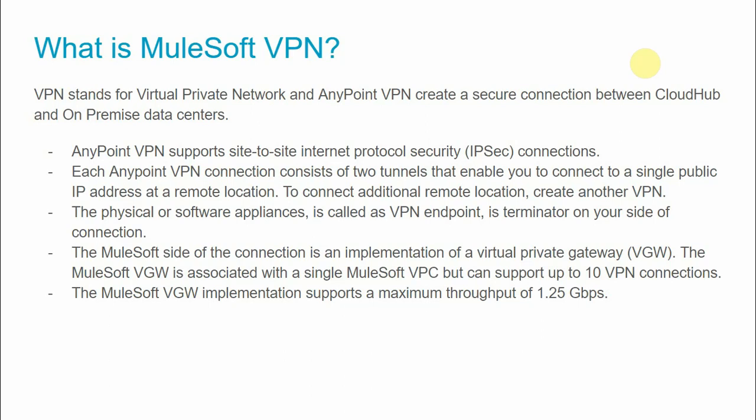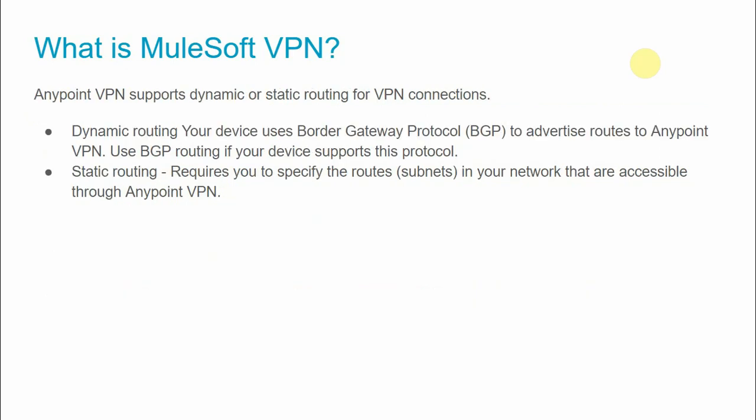One VPN is associated with a single VPC but can support up to 10 VPN connections. So one VPC can be associated with up to 10 VPNs. The maximum throughput provided by MuleSoft VPN is around 1.25 Gbps.